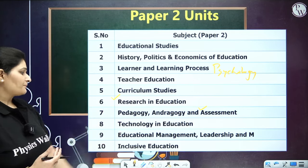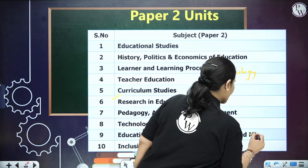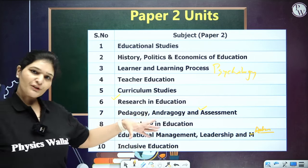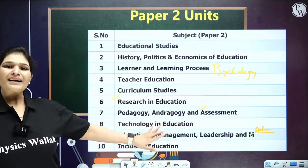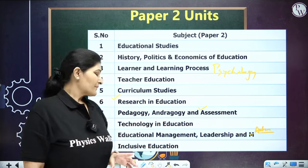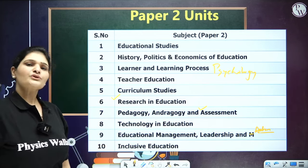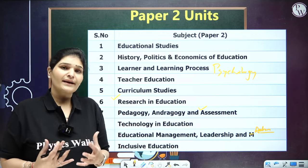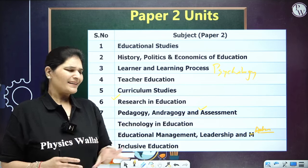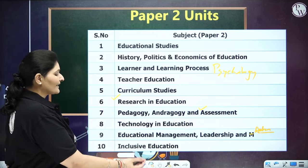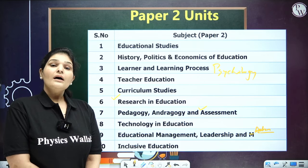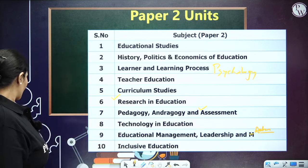Unit 9 is Educational Management, Leadership, and Administration — different leadership theories, leadership styles, management objectives, and proper administration required for the entire education ecosystem across India. Unit 10 is Inclusive Education — policies, diversity, how we embrace education, UNCRPD, WHO, United Nations norms and guidelines, different kinds of disabilities, and assessment and teaching techniques with regard to inclusion and diversification of education.